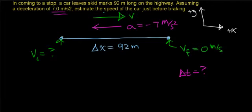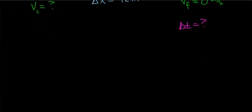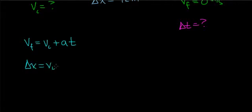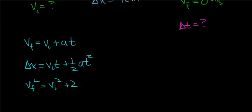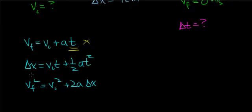To determine the initial velocity, we can look at three kinematic equations: v_f = v_i + at; Δx = v_i·t + ½a·t²; and v_f² = v_i² + 2aΔx. Notice that the first two equations contain time as a variable, and we don't know the time in this problem, so those equations are not the most useful to begin with.